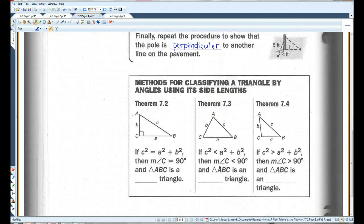All right. Methods for classifying a triangle by angles using its side lengths. All right. This is just a review of the theorems we just learned. If the Pythagorean works, if C squared equals A squared plus B squared, you have a right triangle. If C squared is less than that, it's an acute triangle. C squared is greater, obtuse triangle.